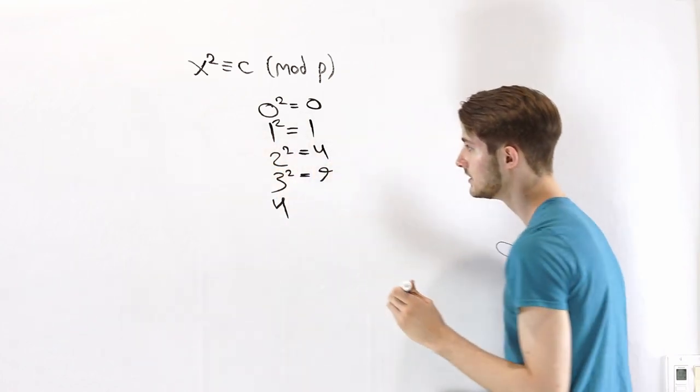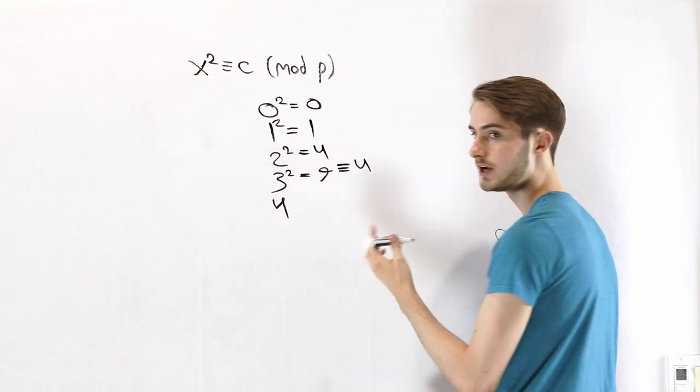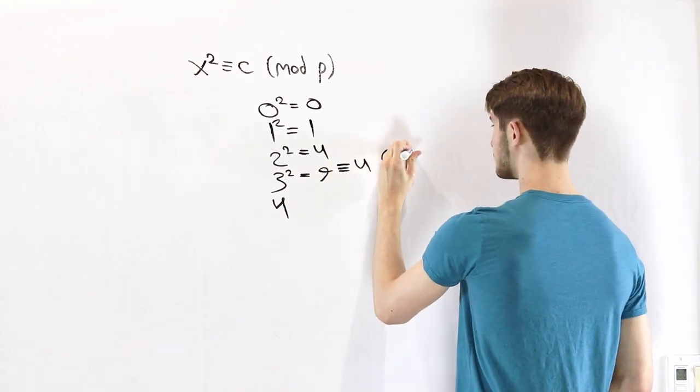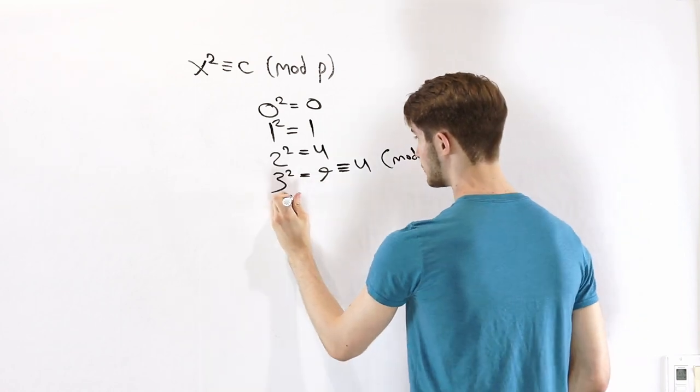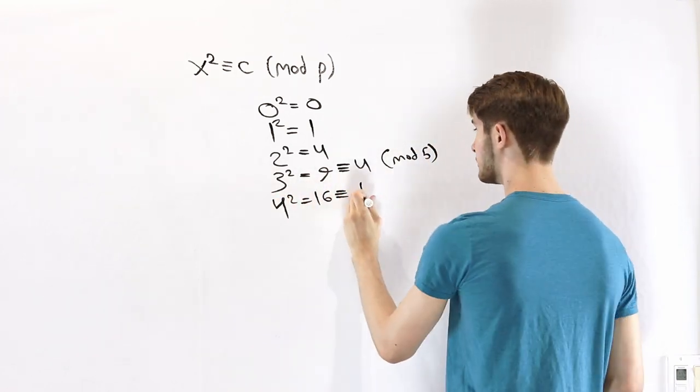3 squared is 9, but we can reduce 9 mod 5, and that's going to give us 4 mod 5. And then 4 squared is 16, and if we reduce 16 mod 5, we're going to get 1.